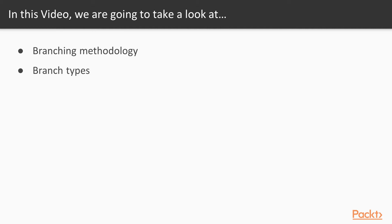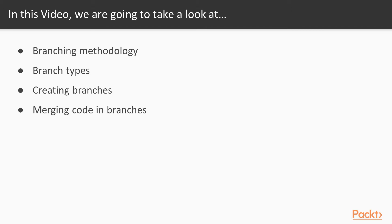We're going to talk about branch types — there are various branch types you can create in Git. We're going to create branches, show you how to merge code in branches, and demo it in our Git Bash environment to show you how you'd do it through the command line. If you're using other tooling like a UI client — which we talked about earlier in this course — you may want to use one of those for your branching and merging strategy. That's very common and acceptable; for some people it's just a lot easier.